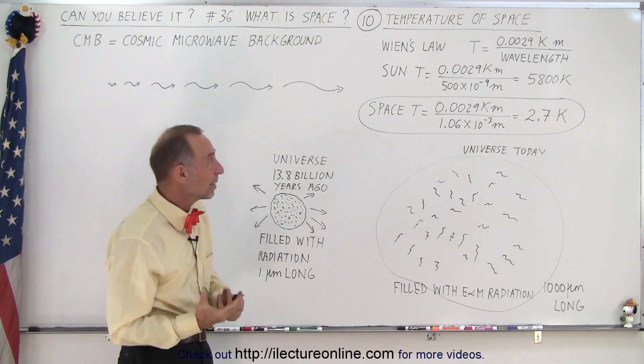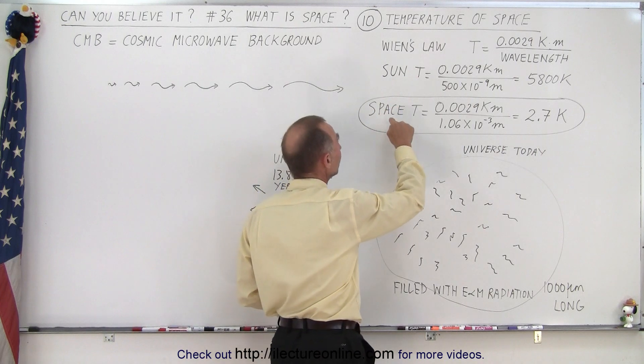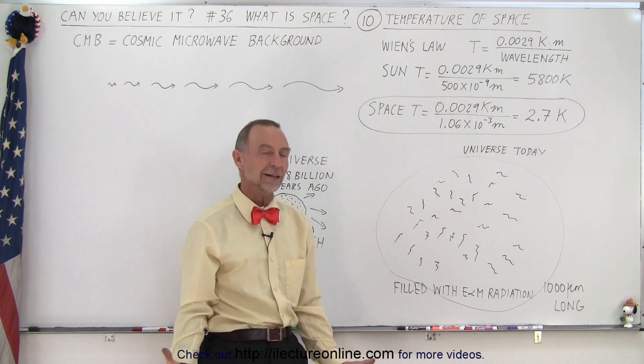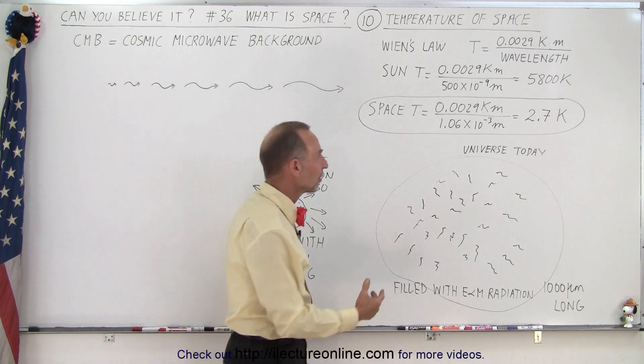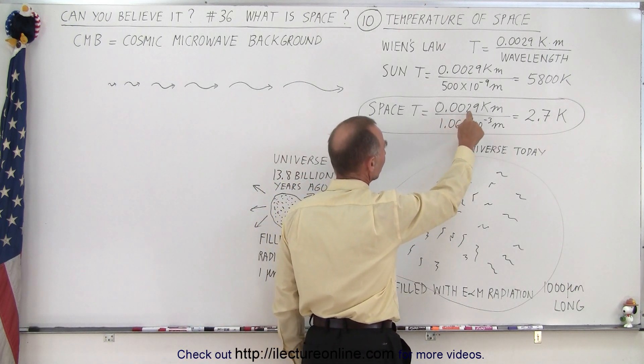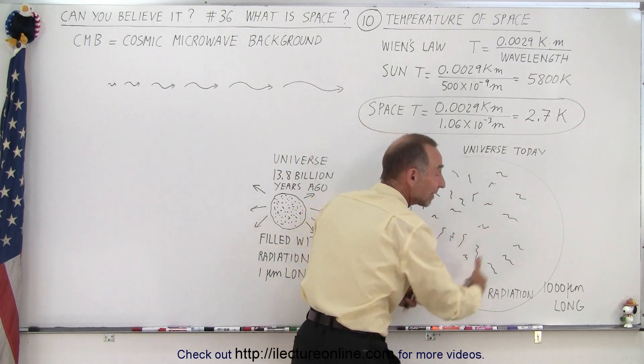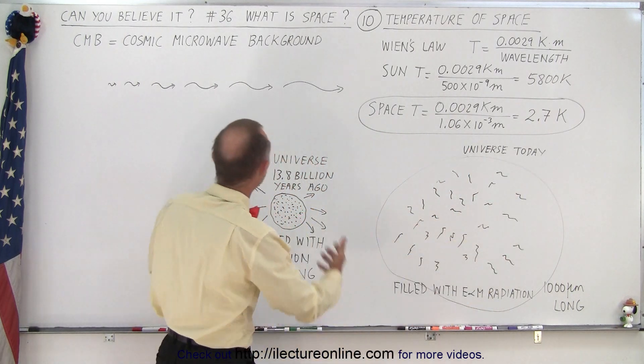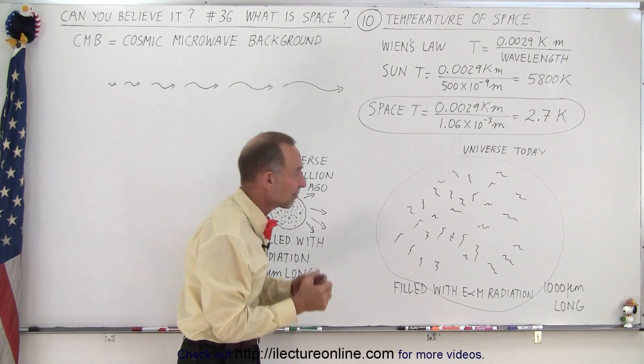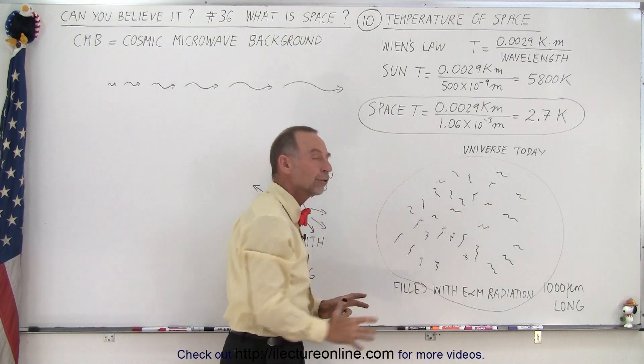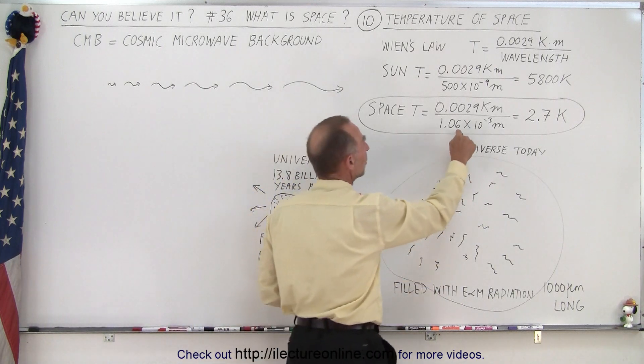So with the same idea we can use Wien's Law to calculate the space temperature, the temperature of space itself. And the temperature is 0.0029 divided by the typical wavelength that's in the radiation, what we call the CMB or the cosmic microwave background radiation, that permeates all of the universe, and if we take that wavelength and plug them in here...